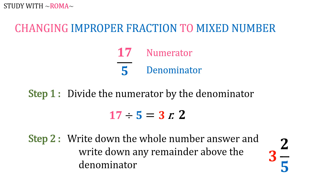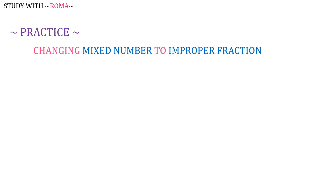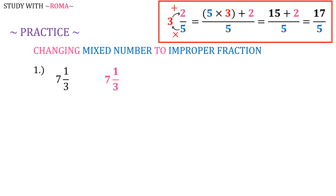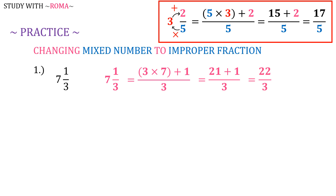And that ends our discussion, but stay tuned as we study more examples. Let's practice changing mixed number to improper fraction. Number 1: 7 and 1 third. Remember our guide? So 7 and 1 third is equal to 3 times 7 plus 1, all over 3, equals 21 plus 1 all over 3, which is equal to 22 over 3.